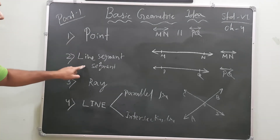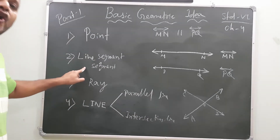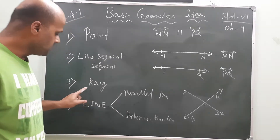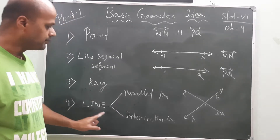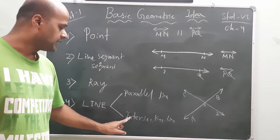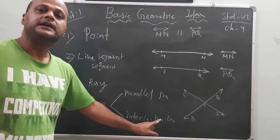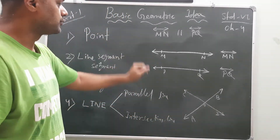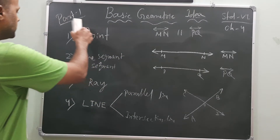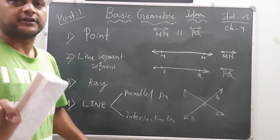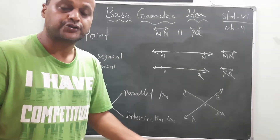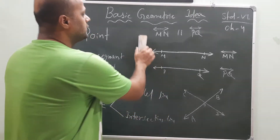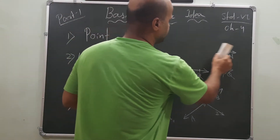So these four are very important: first is point, second is line segment or segment, third is ray, and fourth is line. Lines are of two types — parallel line and intersecting line. Some questions regarding these four concepts will be discussed here, and then we will go further so you can easily understand.